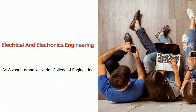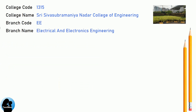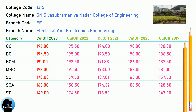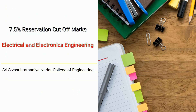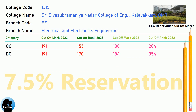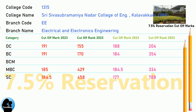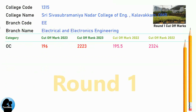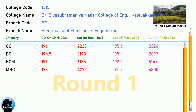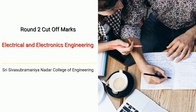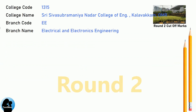DNA Cut-Off for Shri Ifsu Bramanya Nadar College of Engineering. DNA 7.5 Reservation Cut-Off for Shri Ifsu Bramanya Nadar College of Engineering in Electrical and Electronics Engineering. DNA Round 1 Cut-Off and DNA Round 2 Cut-Off for Shri Ifsu Bramanya Nadar College of Engineering in Electrical and Electronics Engineering.